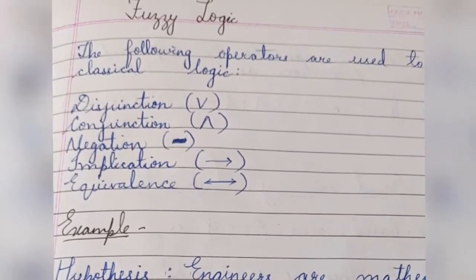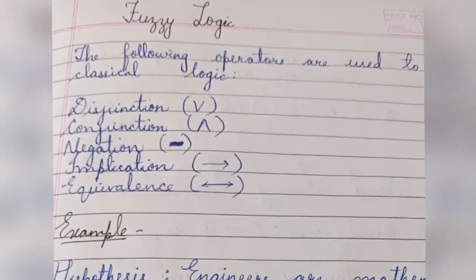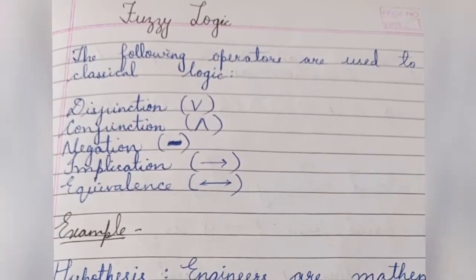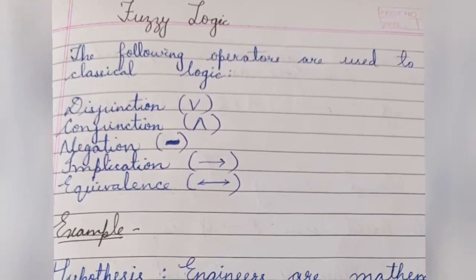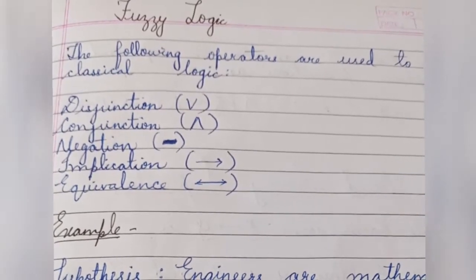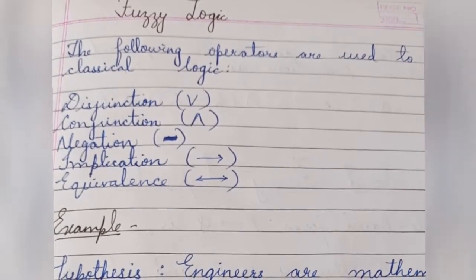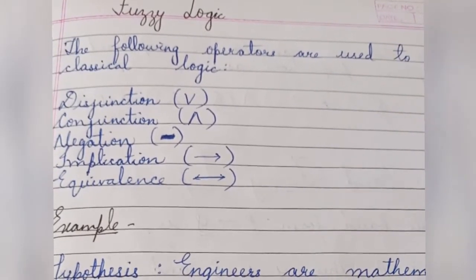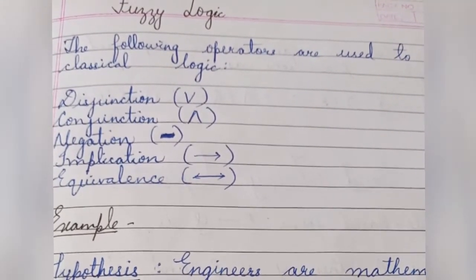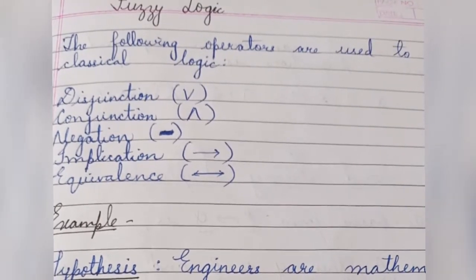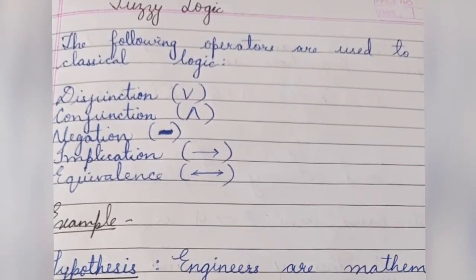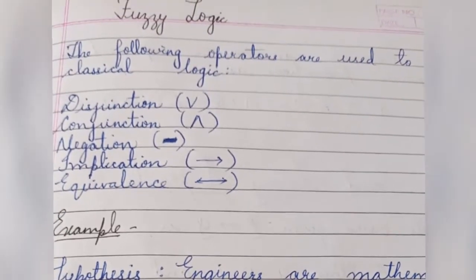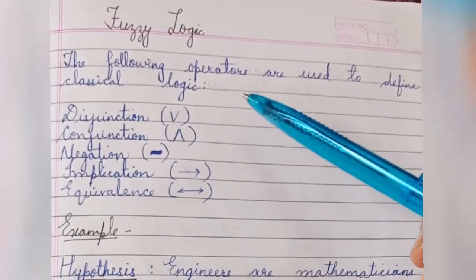Welcome back to the soft computing series. This video covers rule-based fuzzy implication. Firstly, let's see what is fuzzy logic. The objective of fuzzy logic has been to make computers think like humans. Fuzzy logic can deal with the vagueness intrinsic to human thinking and natural language, and recognizes that its nature is different from randomness.